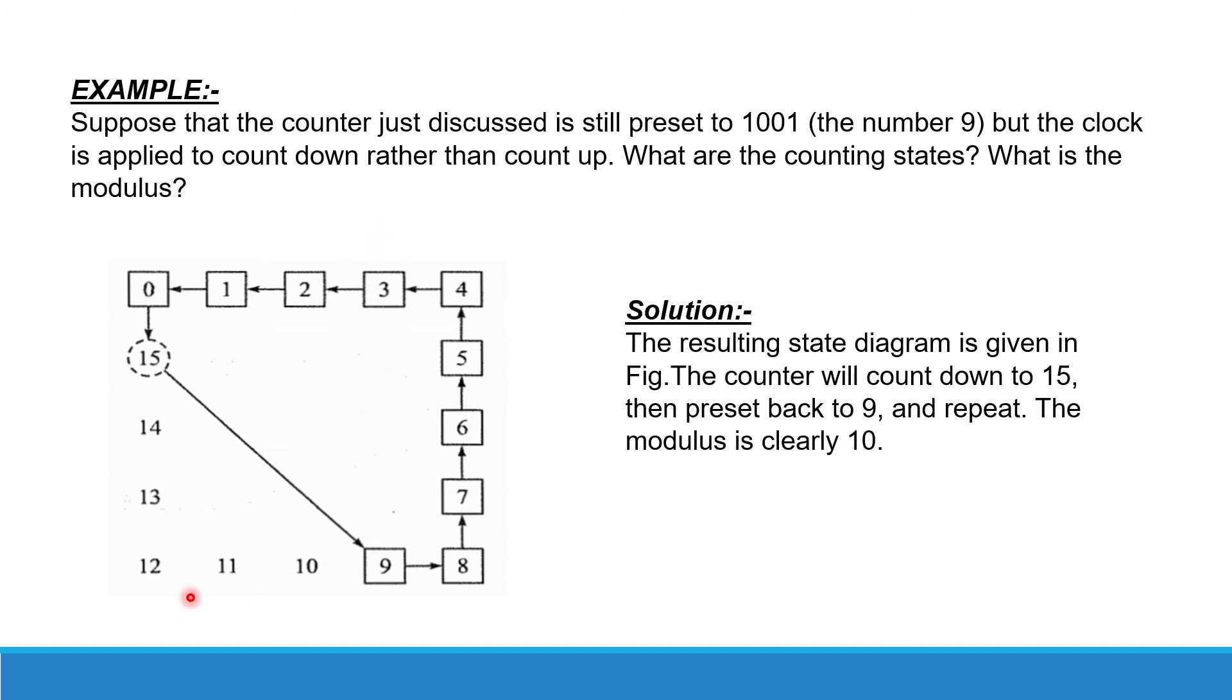By referring to this diagram, we can surely say that the counter will count down to 15 and then reset back to 9, and then this cycle repeats like 9, then the counter goes from 9 to 8, then to 7, then to 6, then to 5, then to 4, 3, to 1, likewise, till 0, and it will preset to 9 and this cycle goes on.